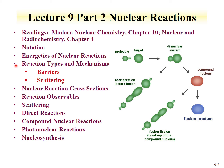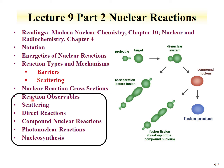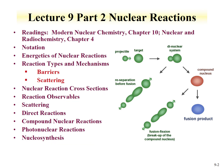Part 1 covered notations, energetics of reactions, reaction types and mechanisms, and ended with nuclear reaction cross-sections. Part 2 will cover reaction observables, different types of reactions including scattering, direct reactions, compound nuclear reactions, reactions with photons and photonuclear reactions, and we'll complete the lecture with a discussion of nucleosynthesis — a stellar process in which nuclear reactions are responsible for the formation of elements.